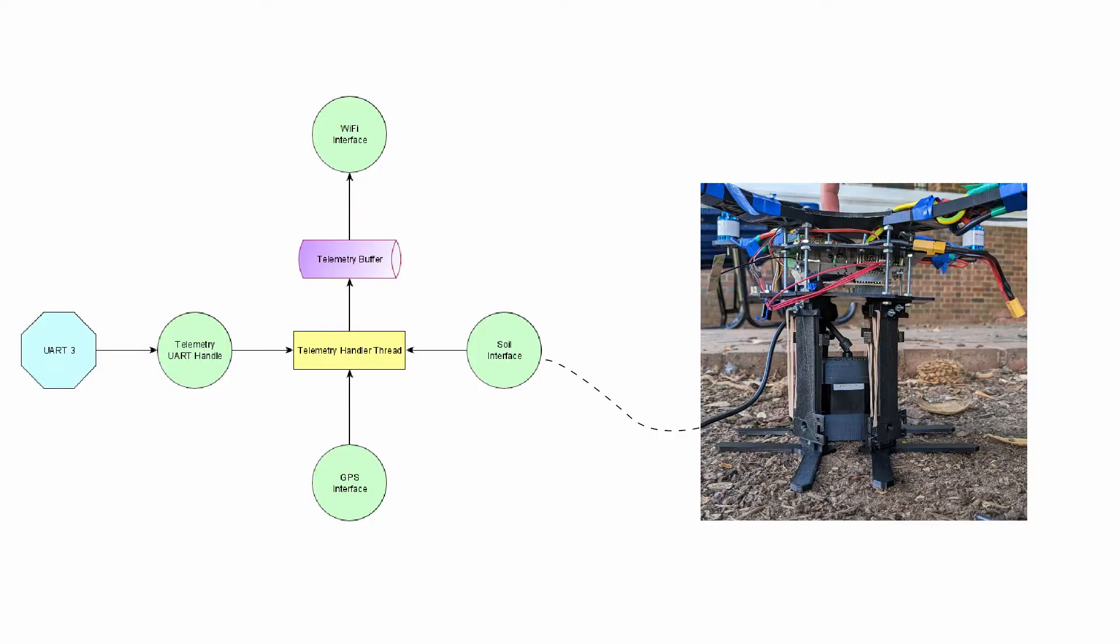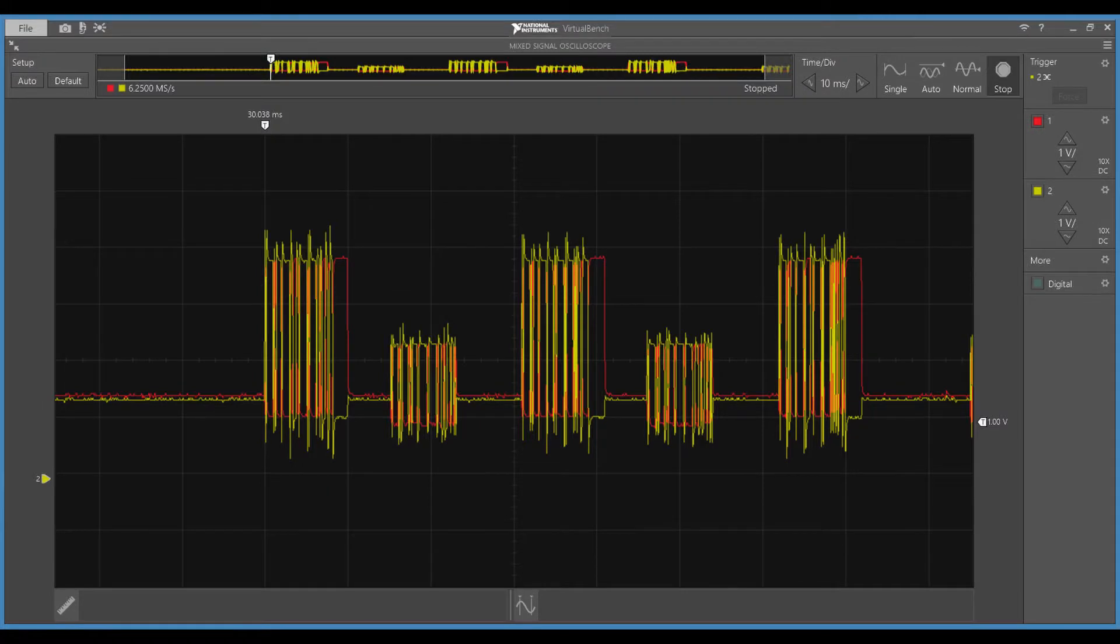When in the ground, the drone can collect data with the soil sensor and forward it in the drone's telemetry packets. In the figure displayed, you can see data requests and the responses from the sensor. First nitrogen, then phosphorus, and finally potassium.